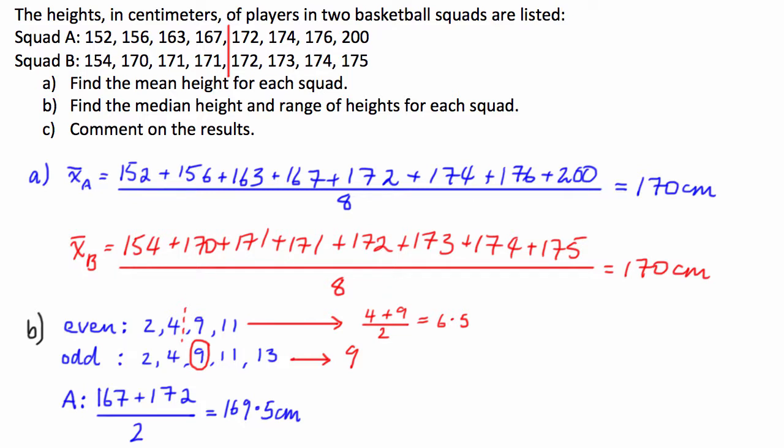And for squad B, we have halfway between 171 and 172. Although we don't have to really work this out, it's always good to put our working out down on the page. So this is going to be 171.5 centimeters. You can see that half of the numbers lie below this number for squad B, and half of the numbers lie below this number for squad A.